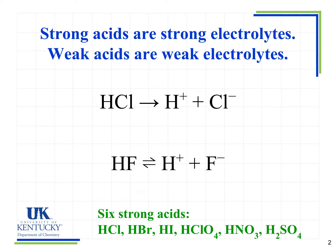We've previously talked about the difference between strong electrolytes and weak electrolytes. Strong electrolytes dissociate completely in water, and we see our one-direction arrow here. So things like HCl, which is a strong acid, will completely dissociate into its ions. Weak acids are weak electrolytes, meaning they do not completely dissociate. Something like HF, which is a weak acid, we use our equilibrium arrow. That means the reaction is going in both directions, but only a small fraction of our molecules actually dissociate into the ions.